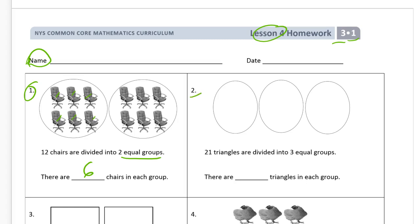Number 2, 21 triangles are divided into three equal groups. So we've got 21 triangles. Here's how I'm going to draw them. 1, 2, 3, 4, 5, 6, 7, 8, 9, 10, 11, 12, 13, 14, 15, 16, 17, 18, 19, 20, 21.